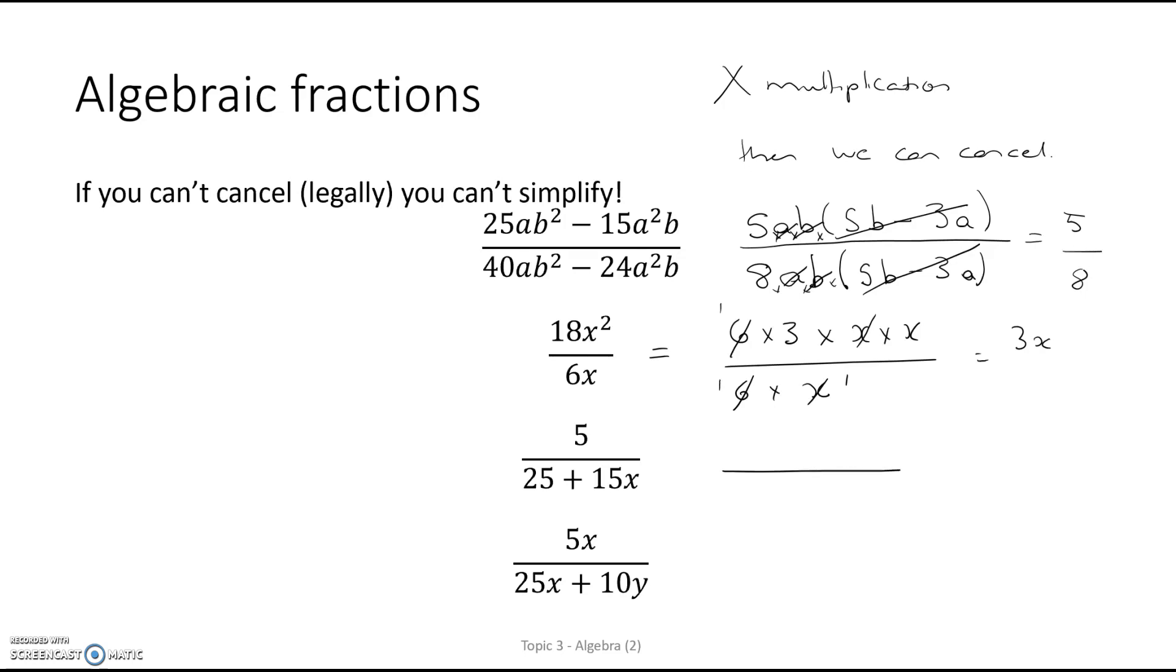For the next example, the third example, it's 5 times 1 on the top line. And then 5 times, 5 times what is 25? That's 5 times 5 plus 5 times 3x. Now there's a times in there, even though we can't see it. So we can cancel that. And we're left with 1 over 5 plus 3x.